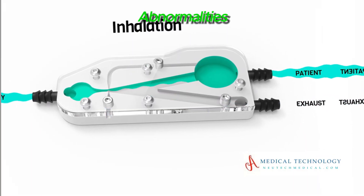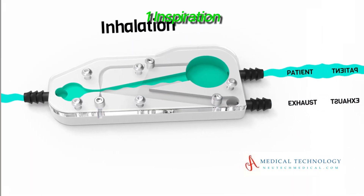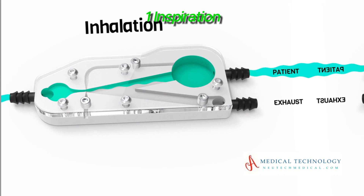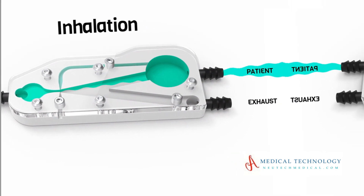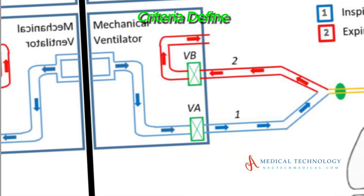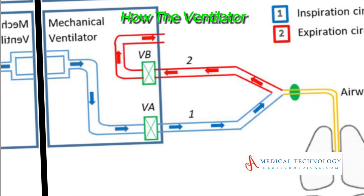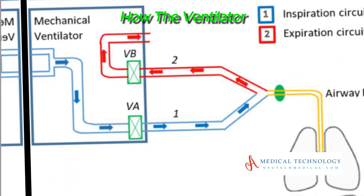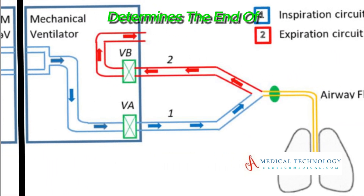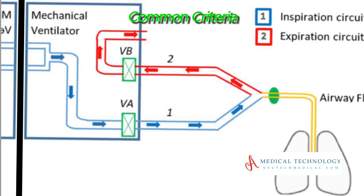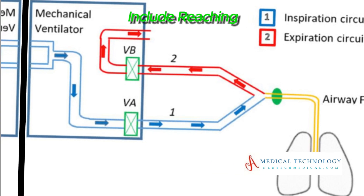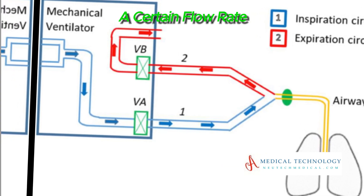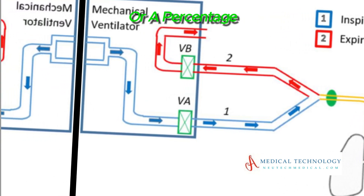Eleventh, ventilator graphics and waveforms: monitor ventilator graphics including pressure, flow, and volume waveforms to assess the patient-ventilator interaction and detect any abnormalities. Also define inspiration termination criteria — how the ventilator determines the end of inspiration, such as reaching a certain flow rate or a percentage of the peak inspiratory pressure.